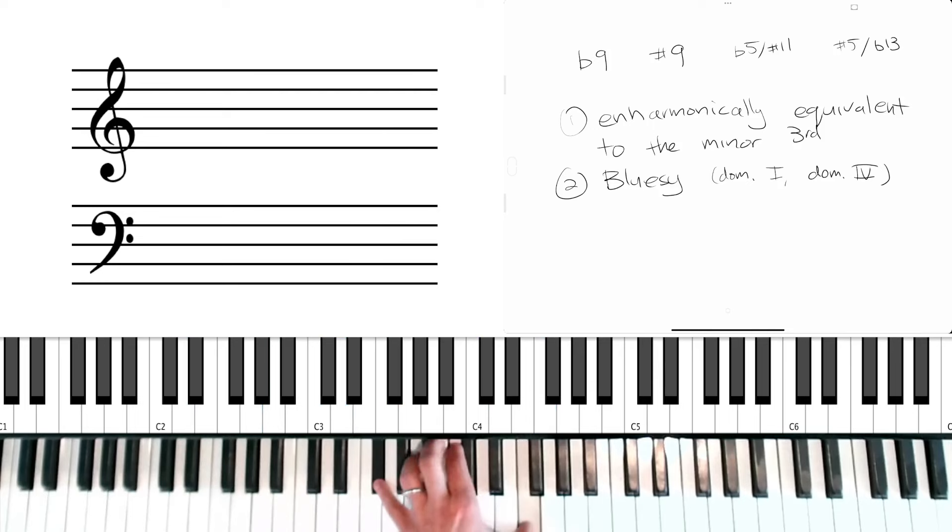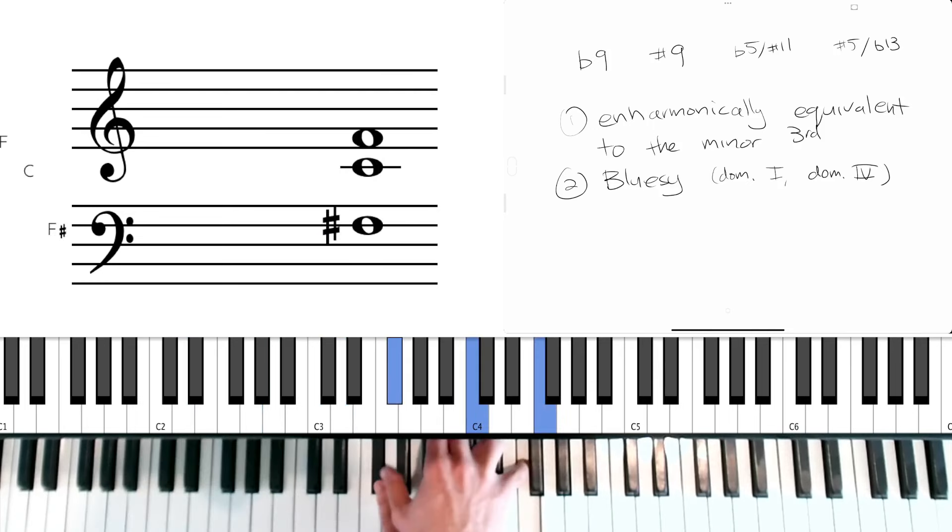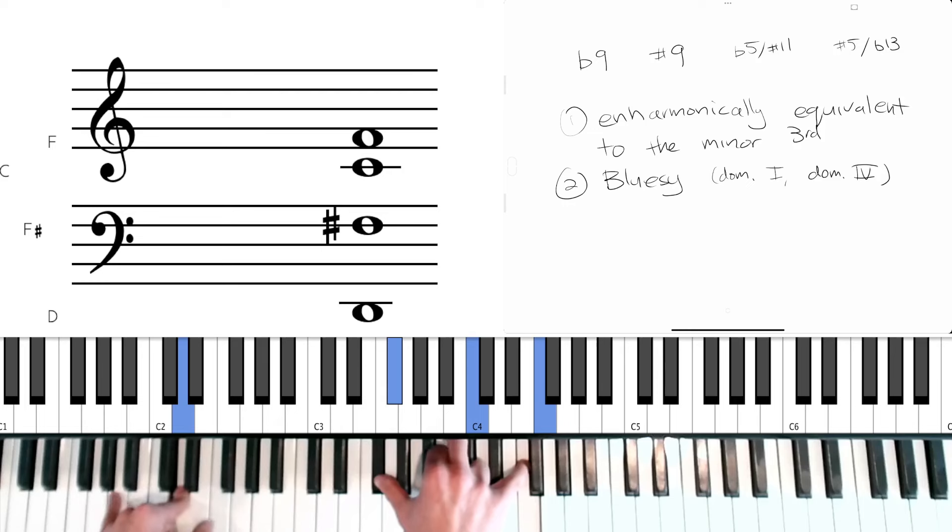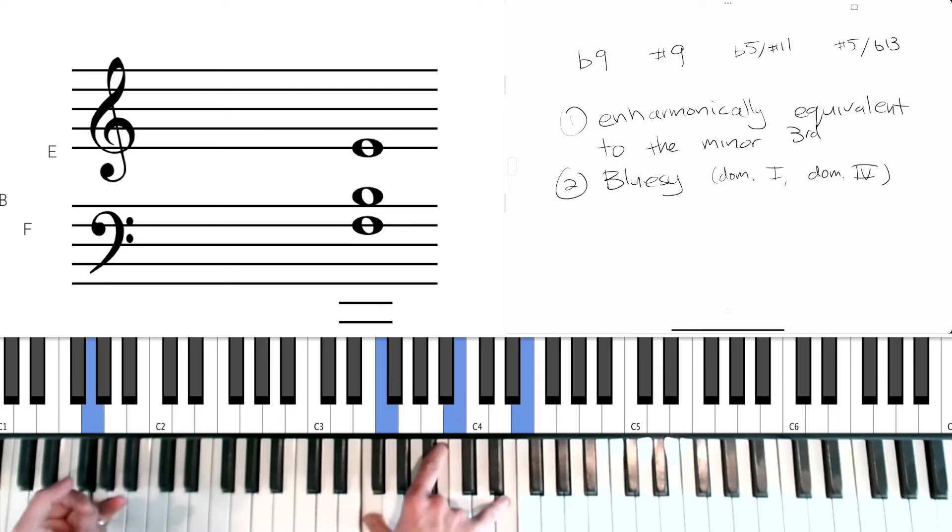And then one of the things that's very cool about this voicing in particular is that when it moves to the four chord, which blueses tend to do, everything gets to move down by just a half step. You keep the same exact interval structure. And now you get a dominant seventh with the 13th, the seventh, the third, and the 13th over G.